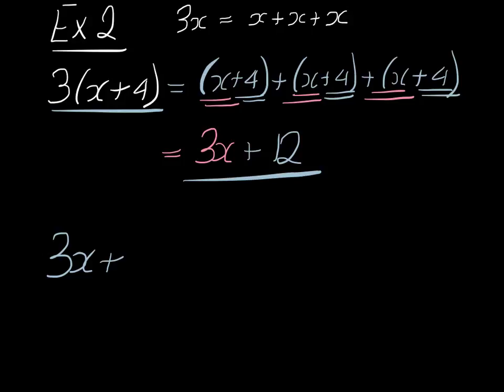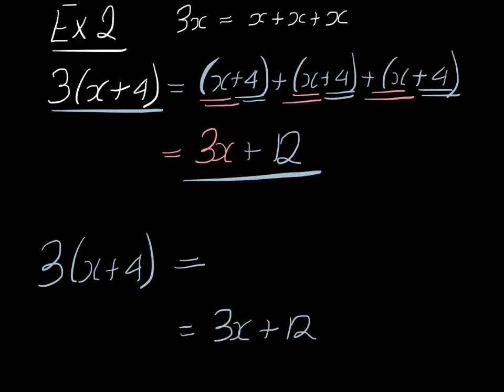3 times x plus 4. Now, the final answer was 3x plus 12. We know the final answer is 3x plus 12. How can we get there quicker than we did above?